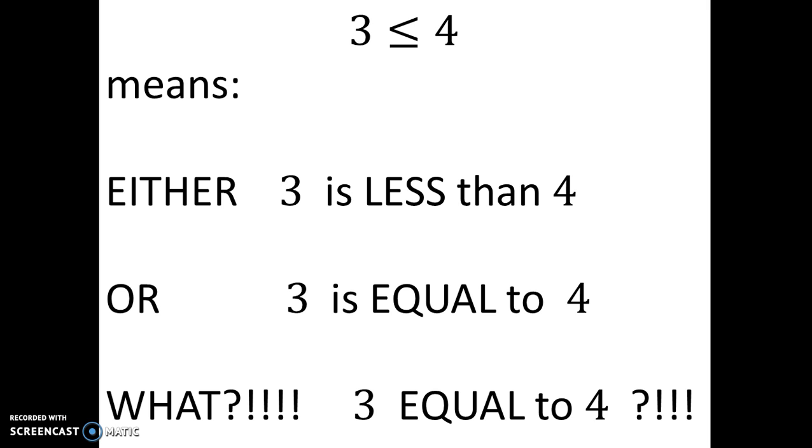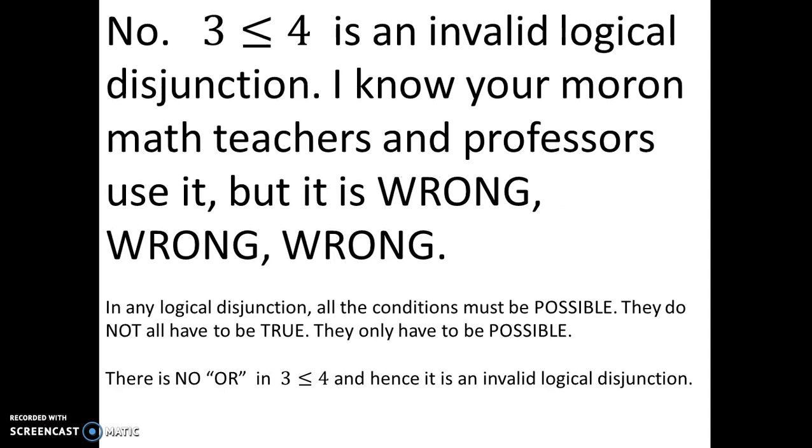You can write 3 is less than 4 but not 3 is less than or equal to 4. Because that is what that inequality sign means. It means 3 is either less than 4 or 3 is equal to 4. Now, if you said 3 is less than or equal to x, that would be perfectly acceptable. Or if you said x is less than or equal to 4, that would also be perfectly acceptable because we don't know what x is yet. But in this case, that logical disjunction is invalid because there is no or. 3 can never equal 4.